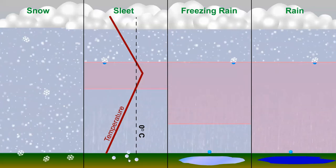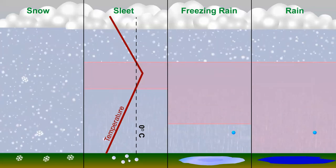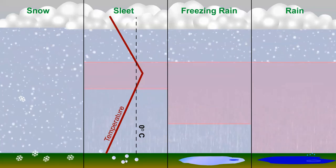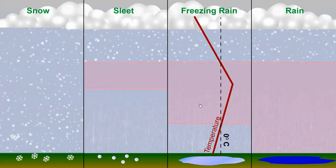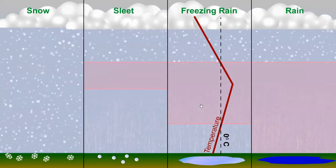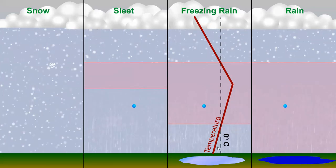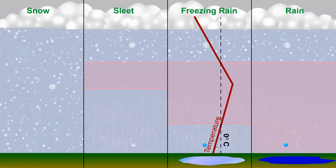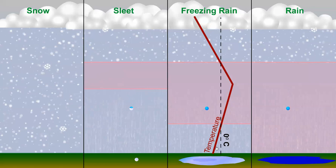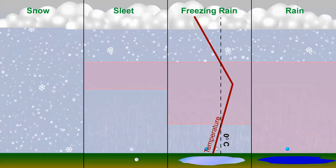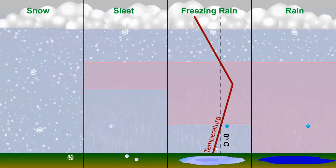Upon hitting the ground, sleet typically bounces. Now, when the layer of cold air near the ground with a temperature less than zero degrees Celsius isn't thick enough to refreeze the raindrops, freezing rain is the result.